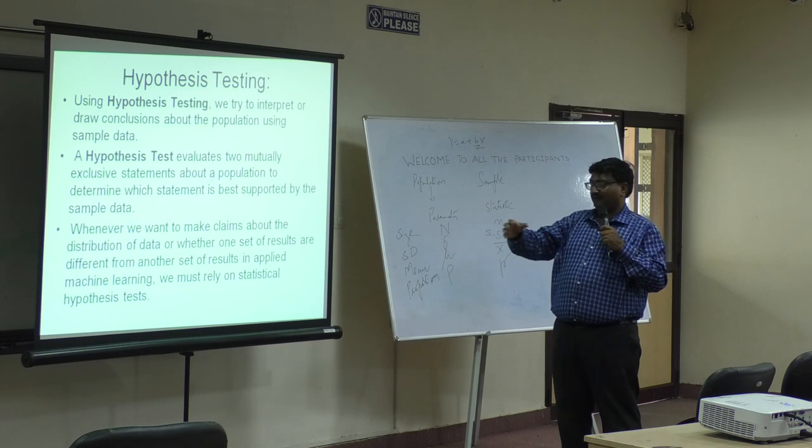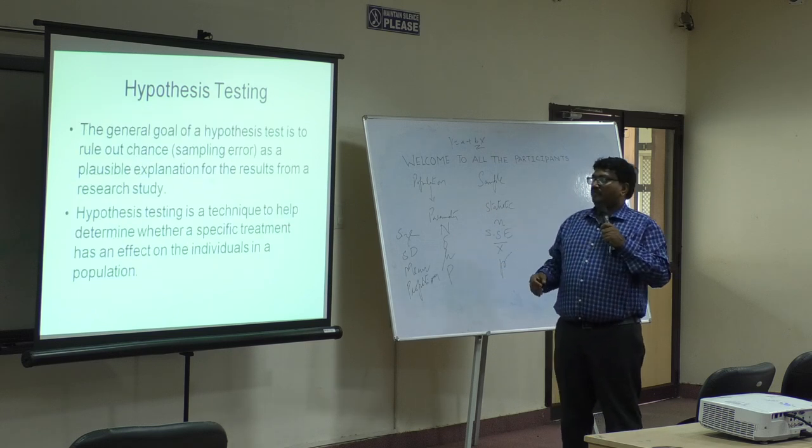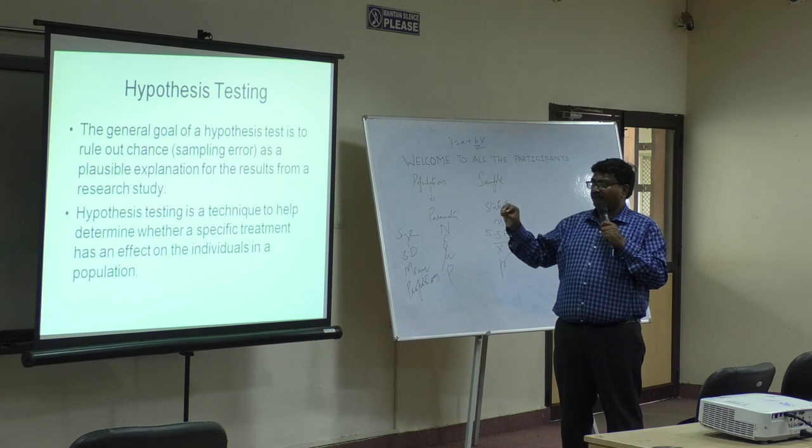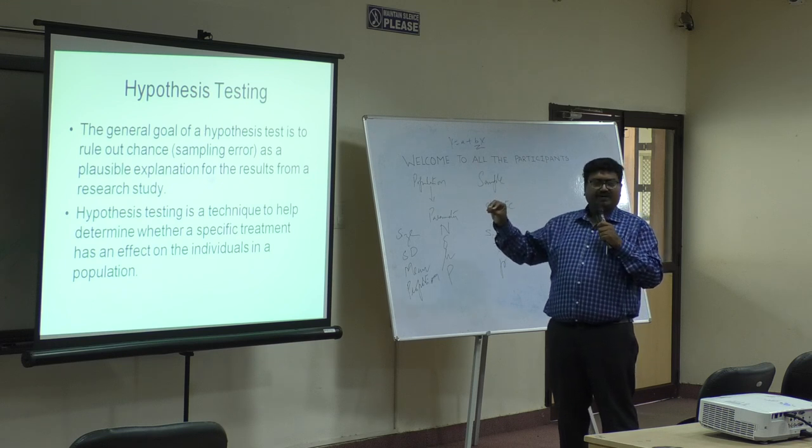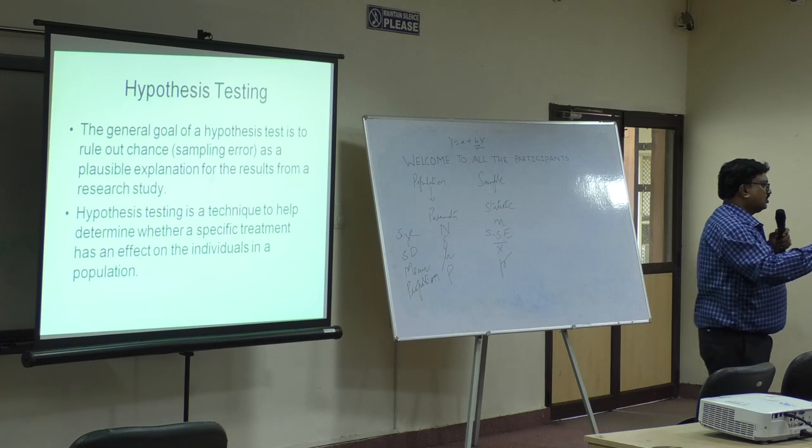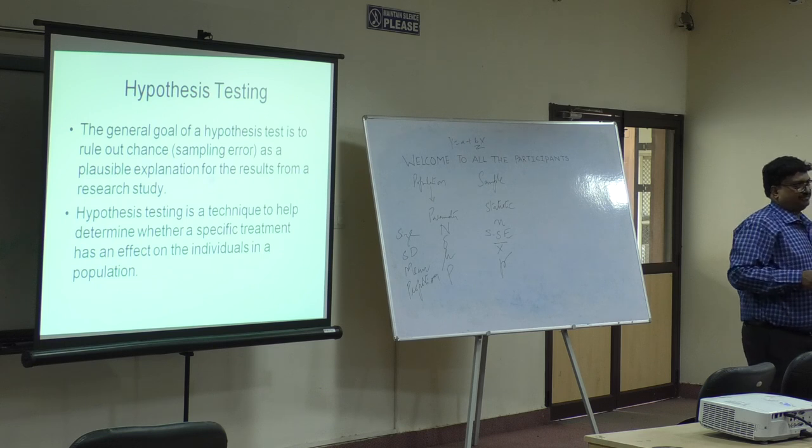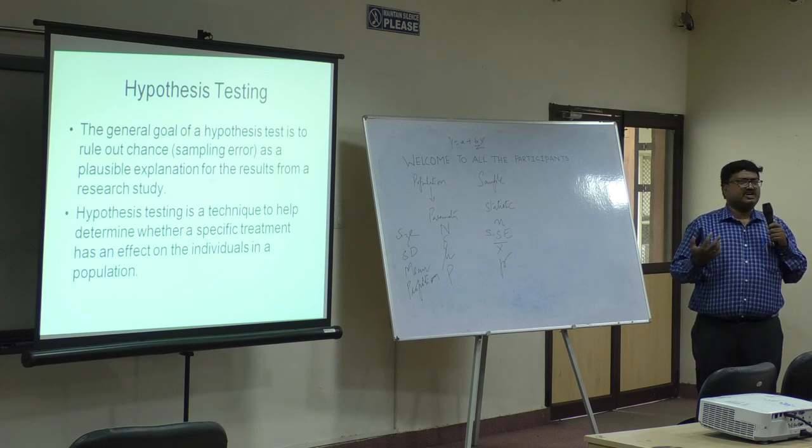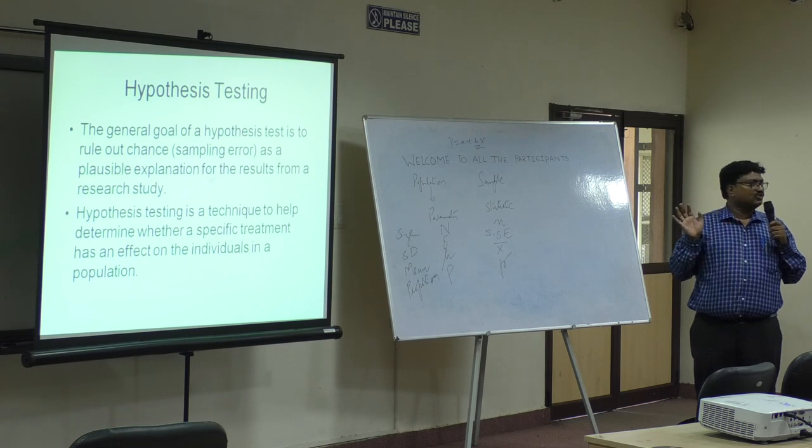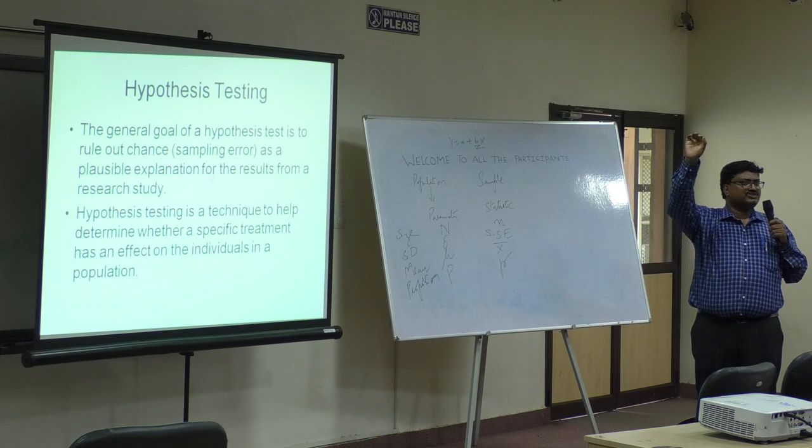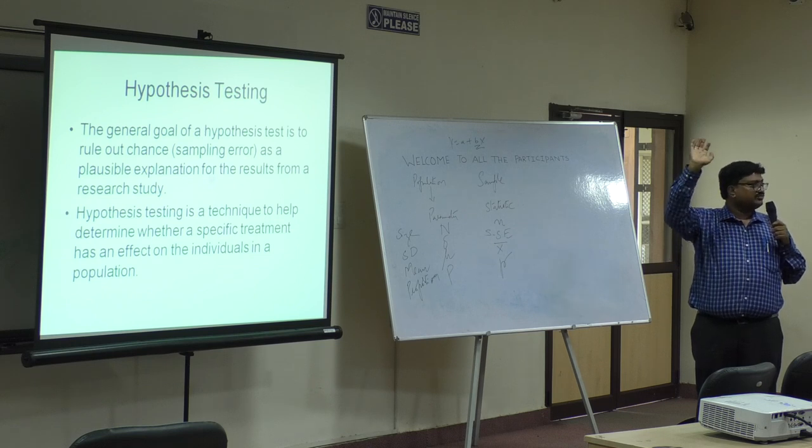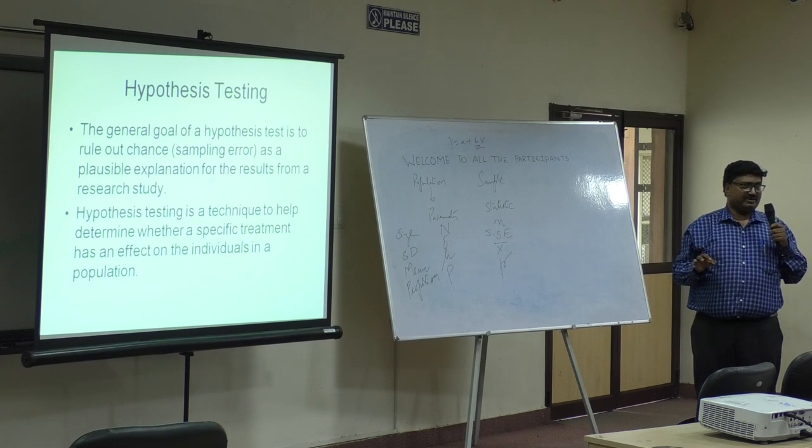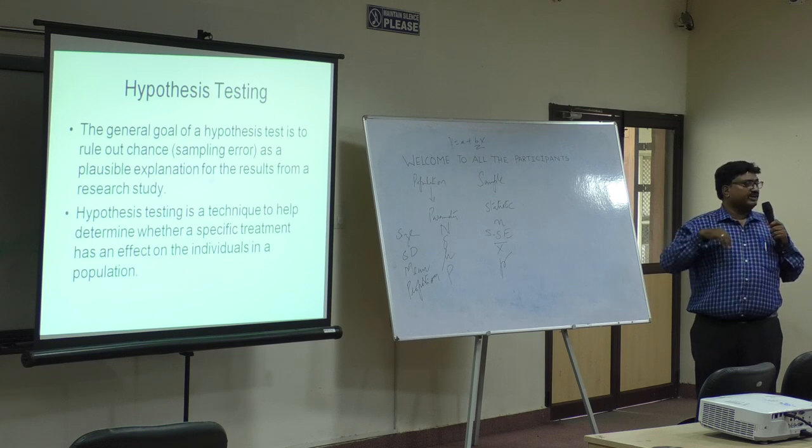The general goal of hypothesis testing is to rule out chance or sampling error. It's a technique to determine whether a specific treatment has an effect—on an individual, a group of individuals, or the whole population. For example, with vaccination: because of TB injections given in some countries, the COVID rate was lower. In countries where TB vaccination is not mandatory, the fatality and mortality rates were quite higher. There's a lot of research going on about why we give basic vaccines to kids in India that are not given abroad.